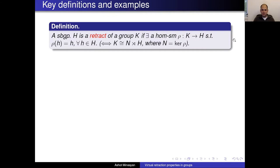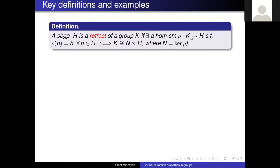In terms of groups, this is equivalent to having a decomposition of the group K as a semi-direct product N ⋊ H, where N is the kernel of the retraction. So a retract is really a semi-direct factor.